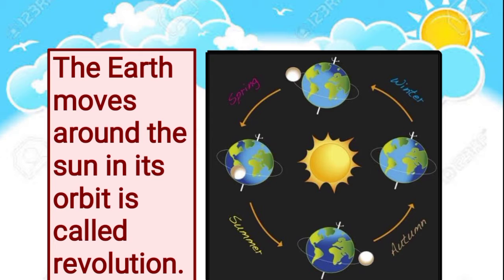The sun is also the center of the solar system and by far its largest object. Revolution is often used as a synonym for rotation, but in many fields of science like astronomy, revolution is referred to as orbital revolution. Rotation means the movement of one body around another, while rotation is used to mean movement around the axis. For example, the moon revolves around the earth and the earth revolves around the sun. This movement of the earth around the sun in a fixed path is called a revolution.